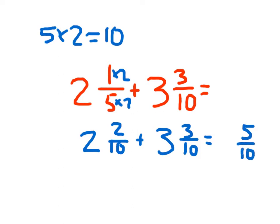We also work with those whole numbers: two plus three is five. Last thing we need to do is simplify five and five-tenths — five and five-tenths is equal to five and one-half, where we simplified five-tenths into one-half. And that's the work for that problem.